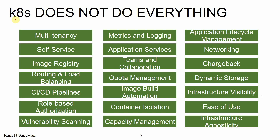All these things you have to do with Kubernetes — it's very hard. Kubernetes does not do everything for you. Weak areas include multi-tenancy, self-service, metrics, and logging. Image registry requires third-party integration — Kubernetes does not help you with that. Routing and load balancing, CI/CD pipelines, role-based authorization, vulnerability scanning, application services, teams and collaboration, quota management, image and app build automation, container isolation, and capacity management are not possible with Kubernetes.